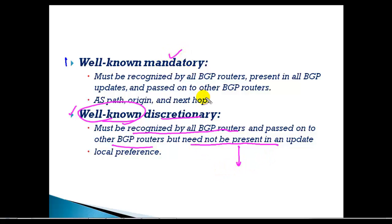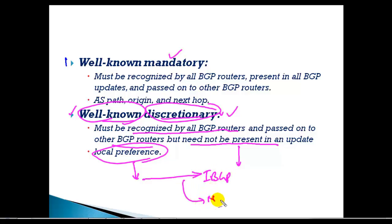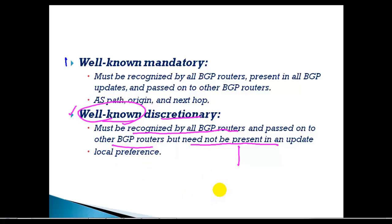An example of well-known discretionary is local preference. Sometimes local preference will be advertised only to internal BGP peers but not to external BGP peers. We will see more detail about these attributes in our next videos — this is just the basic idea of the categories.